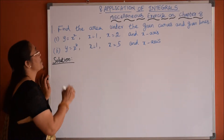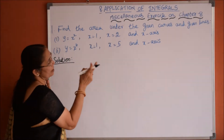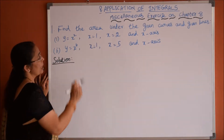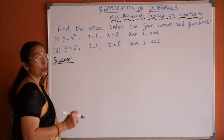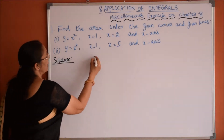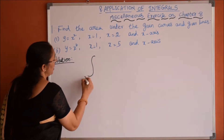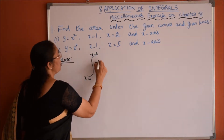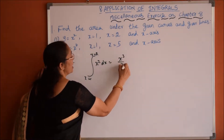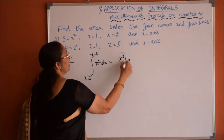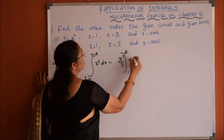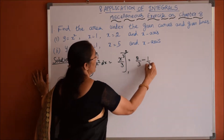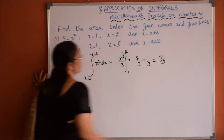Miscellaneous exercise on chapter 8: find the area under the given curves and given lines. y is equal to x square, x is equal to 1, x is equal to 2 and the x-axis. This is directly integration from x=1 to x=2 of f(x) = x square dx, which is x cube divided by 3, with limits from 1 to 2. So we get 8 by 3 minus 1 by 3, which is 7 by 3 square units.